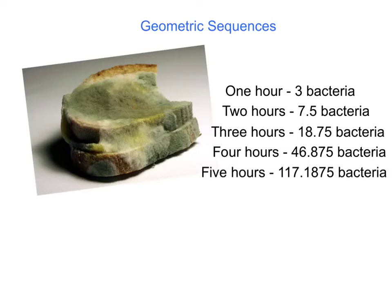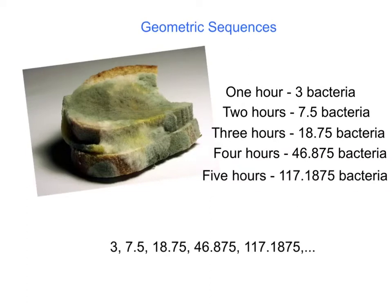These numbers represent a geometric sequence. So here we've written out the geometric sequence: 3, 7.5, 18.75, 46.875, 117.1875.